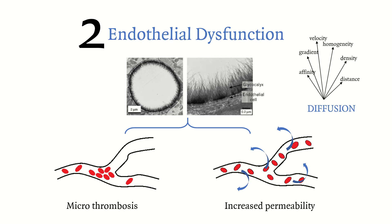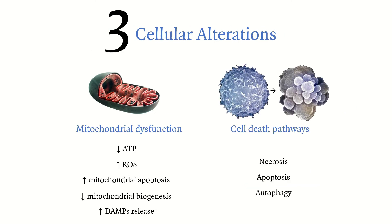The third element we see in sepsis and septic shock is cellular alterations — specifically at the level of the mitochondria: disrupted pathways leading to decreased energy production, increased release of reactive oxygen species, increased apoptosis of mitochondria, and release of more damaging molecules. Cell death pathways are also activated by the interaction of cytokines with the genetic code of cells, leading to necrosis, apoptosis, and autophagy. Overall, you see cellular death and mitochondrial dysfunction.